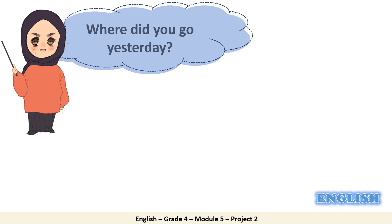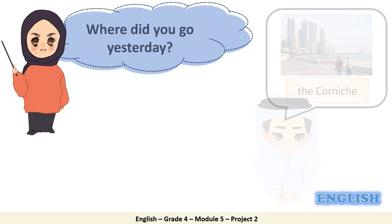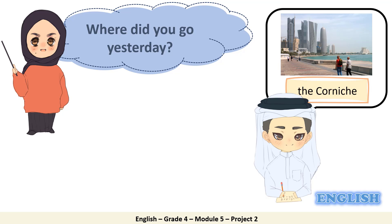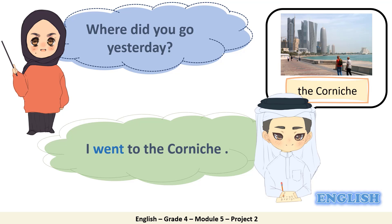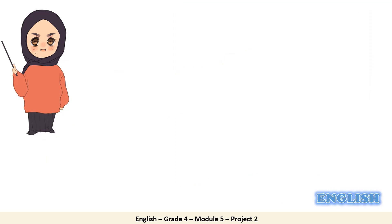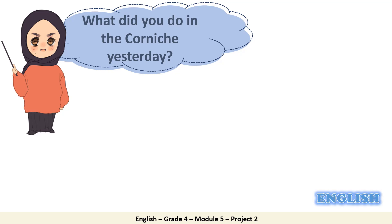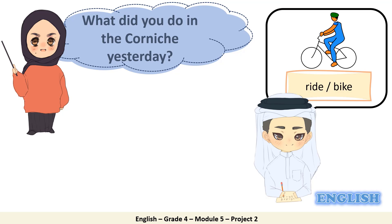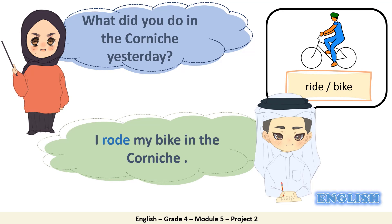Read along: 'Where did you go yesterday?' It's Ahmed's turn. It's written: The Corniche. So Ahmed would say, 'I went to the Corniche.' Good job. Now let's see what Ahmed did yesterday in the Corniche. Read the question: 'What did you do in the Corniche yesterday?' Look at the picture — it's written: Ride Bike. So Ahmed would say, 'I rode my bike in the Corniche.' Great. Rode is the past of ride.